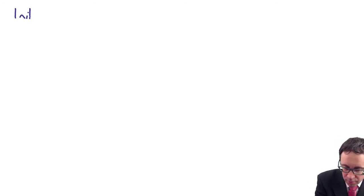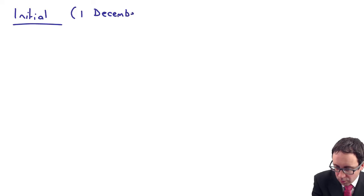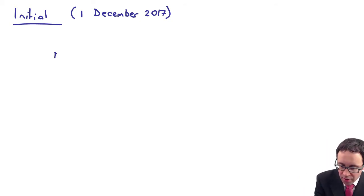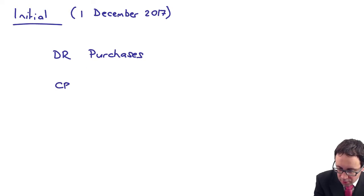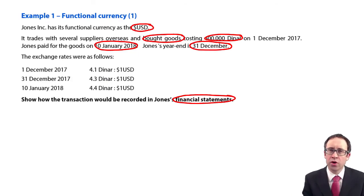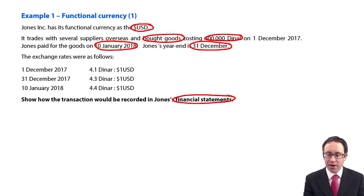For the initial transaction on the 1st of December 2017 — forget about the overseas aspect for now, let's just get the debits and credits right. You've made a credit purchase, so you debit purchases and credit payables. The issue is that the value of the transaction was 400,000 dinar, so we need to translate it into the functional currency of the dollar.